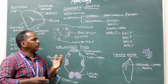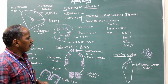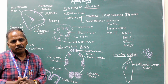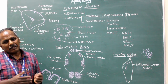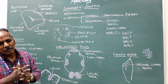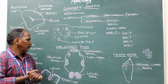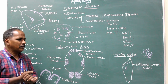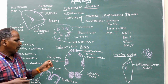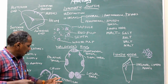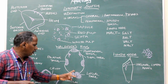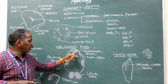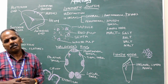Next, the tonsil. A group of lymphatic tissue covered by mucous membrane constitutes a tonsil. There are four pairs of tonsils: a pair of lingual tonsils, a pair of palatine tonsils, a pair of tubal tonsils, and a pair of pharyngeal tonsils.